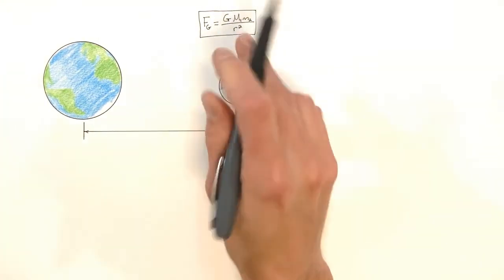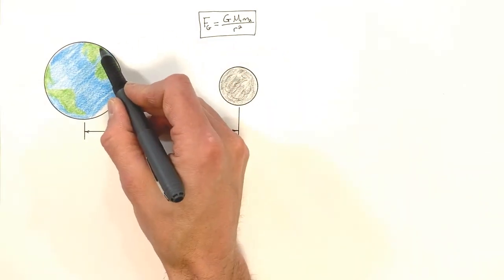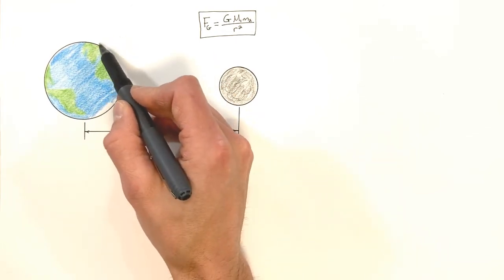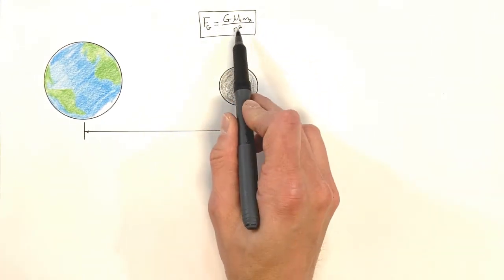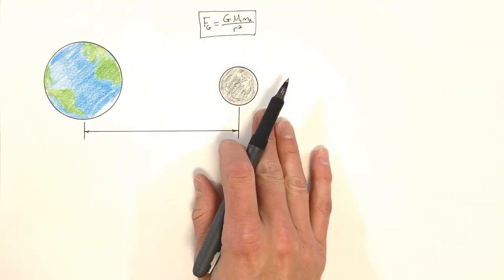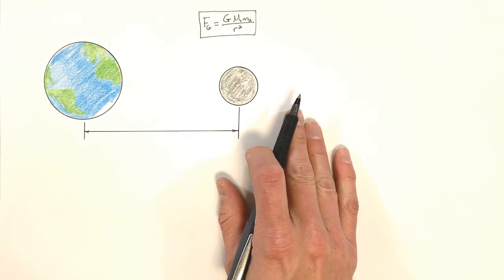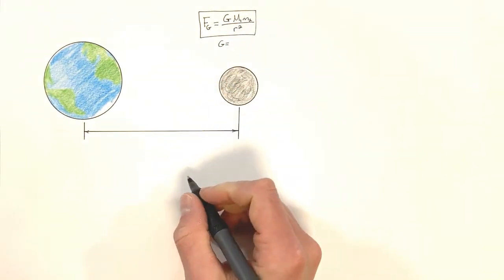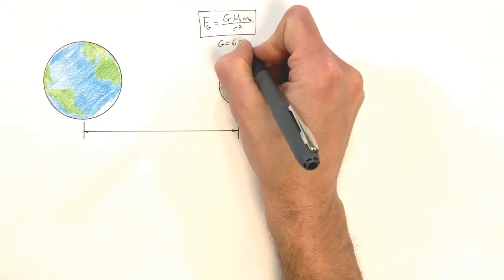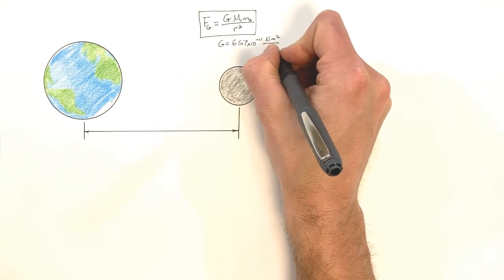This force by gravity is the same force we've talked about in the past — when a block is sitting on the surface of the earth, it's being pulled toward the center of the earth. That force by gravity is no different than what we've dealt with before. Now, there's this capital G in the equation — this is not little g like 9.8 on the surface of the earth. This capital G is what we call the gravitational constant, and it equals 6.67 times 10 to the minus 11 newton meters squared over kilograms squared.